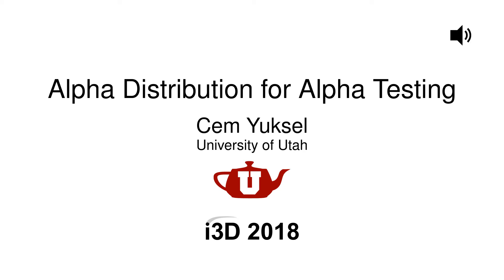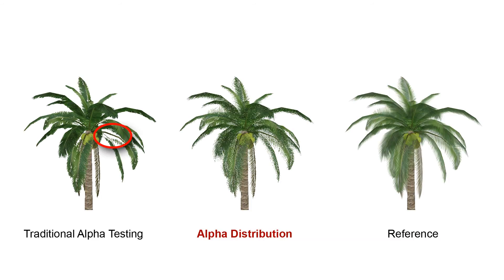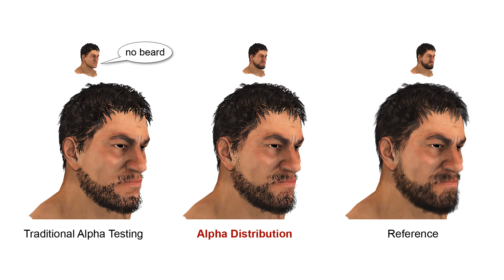This paper introduces the concept of alpha distribution for fixing the well-known problems of alpha testing. Alpha distribution allows properly handling semi-transparent textures, so it fixes the problem of disappearing geometry as models move away from the camera.